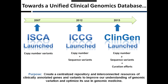Before we get started, I'd like to take a moment to describe the history of the project. ClinGen actually got its start in a different project, first launched in 2007, called the International Standard for Cytogenomic Arrays Consortium, or ISCA. This group focused on standardization of test design and interpretation as it related to cytogenomic microarrays.